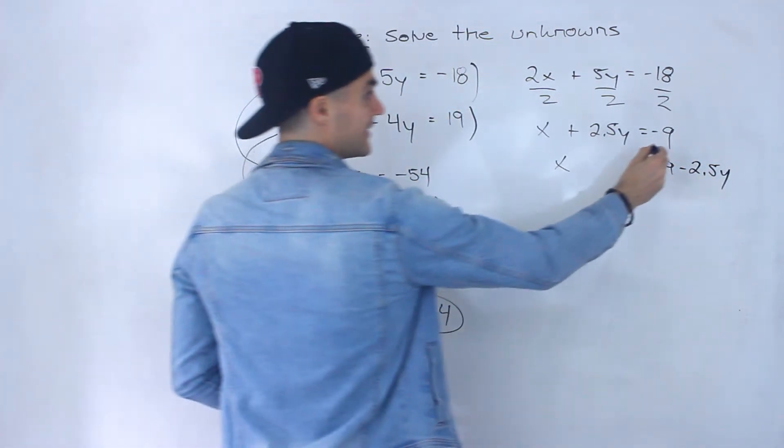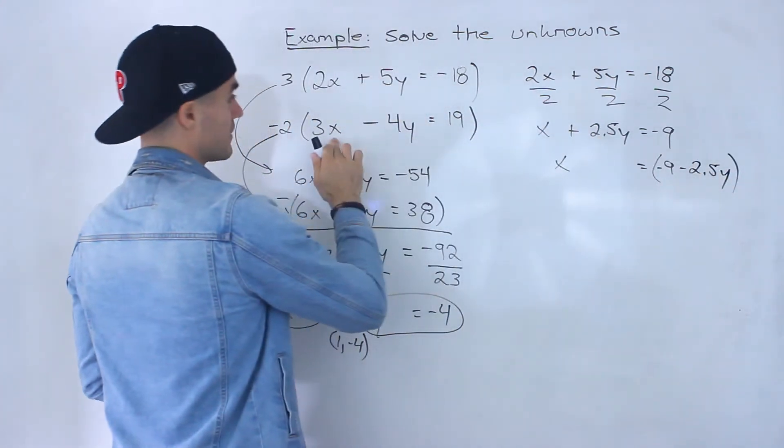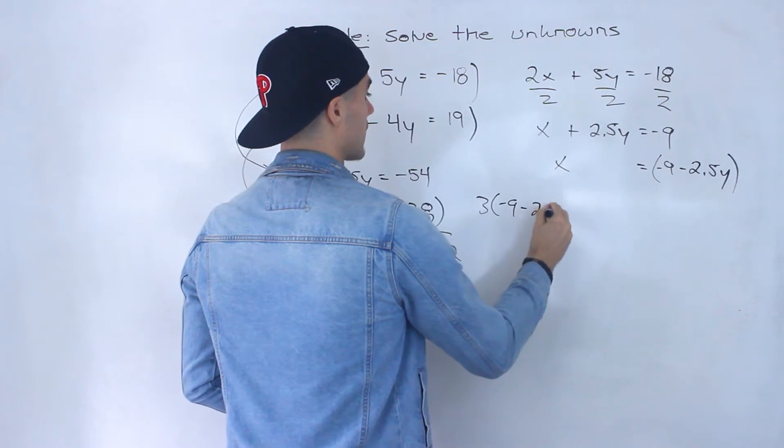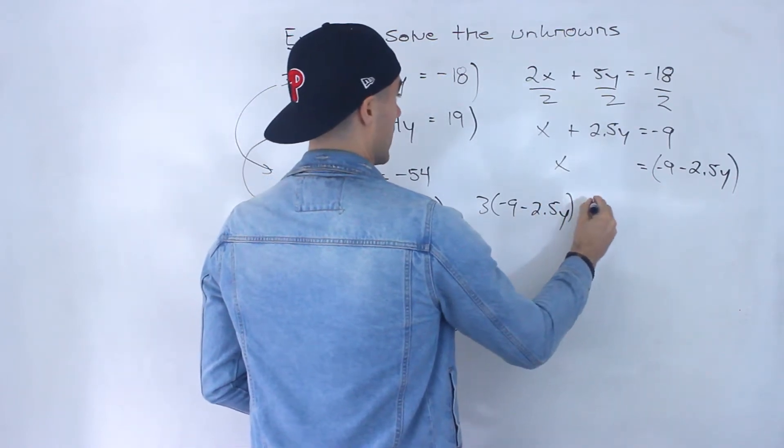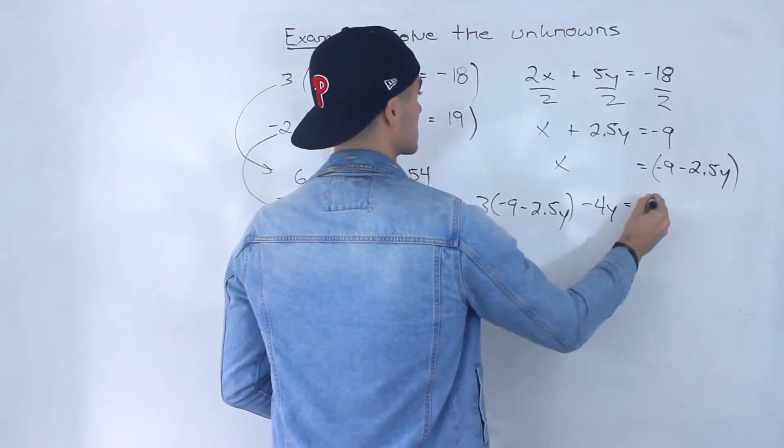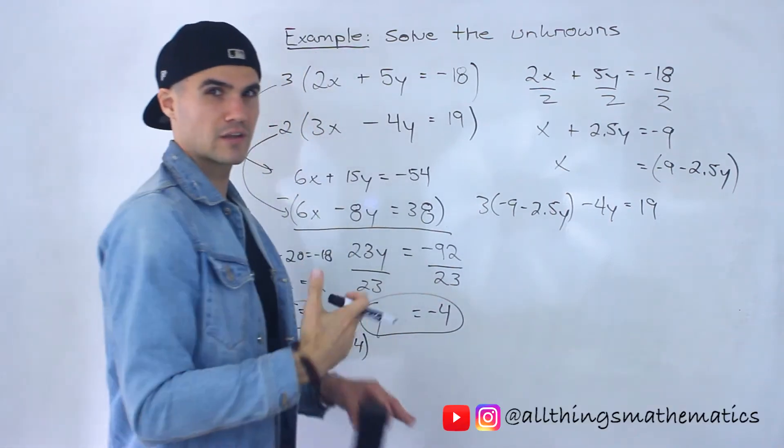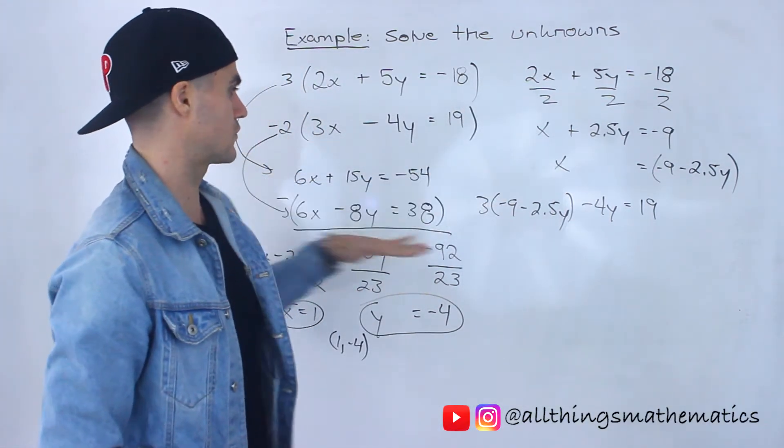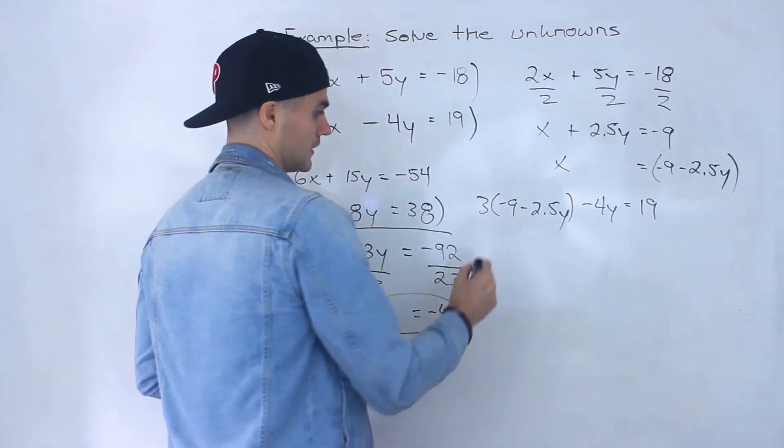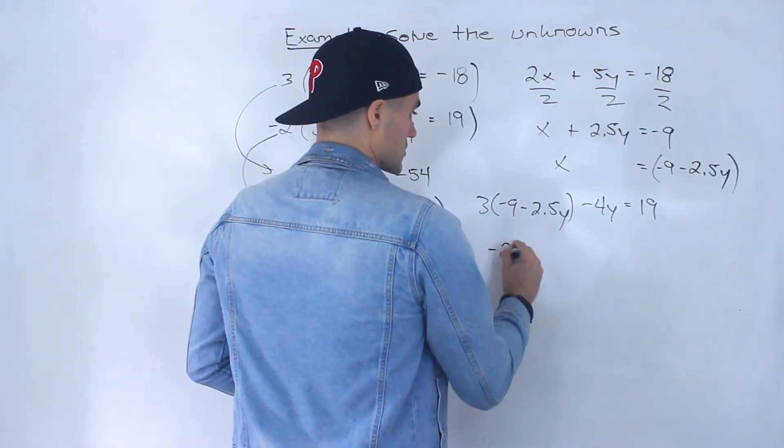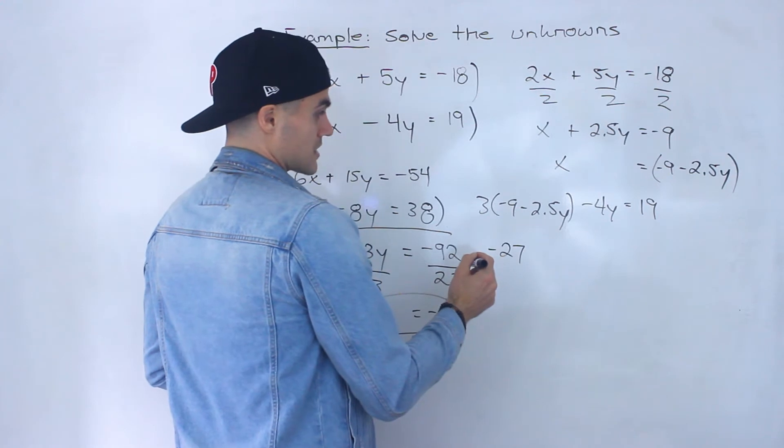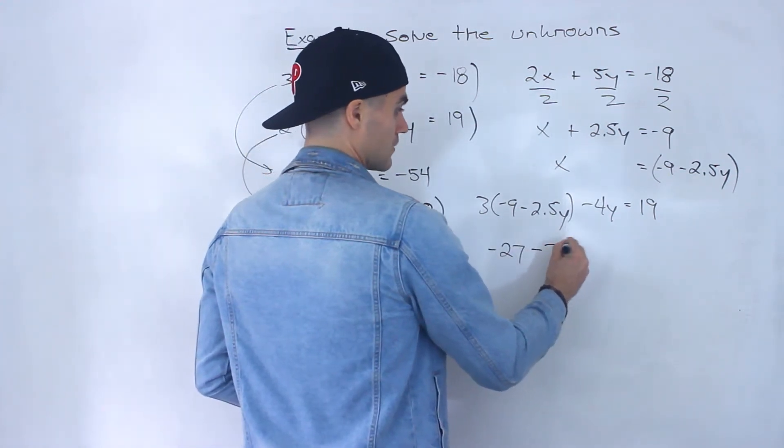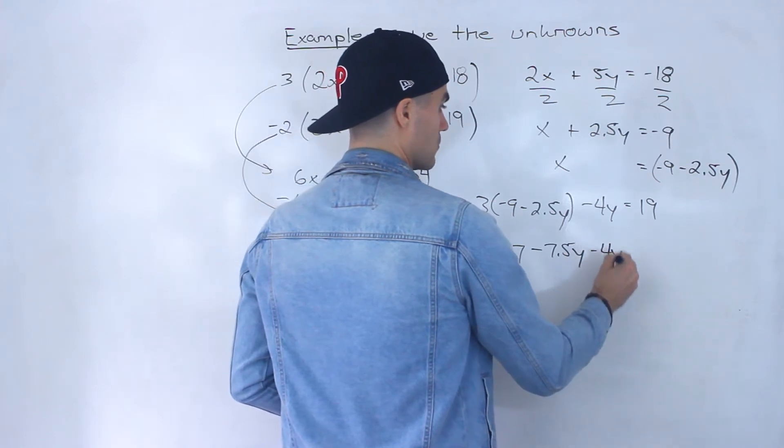And then I could plug in this expression for this x value so I'd have 3 times negative 9 minus 2 and a half y minus 4y equals 19. Right so I feel like it's just a little bit more algebra because we got to do this work initially versus doing it with elimination but some students just like to do substitution a lot more so I thought I would show it as well. In fact I like to do substitution more as well.